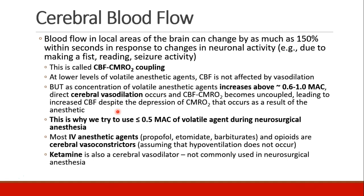At low levels of volatile anesthetic agents, cerebral blood flow is not affected too much by vasodilation — the brain seems to maintain normal cerebral blood flow. But as we increase the concentration of volatile anesthetic above about 0.6 to 1 MAC, depending on the agent, we start to get direct cerebral vasodilation due to the agent, regardless of what cerebral metabolic oxygen consumption is. We call this CBF-CMRO2 uncoupling. Now we get increased cerebral blood flow despite the fact that our anesthetics are depressing CMRO2.